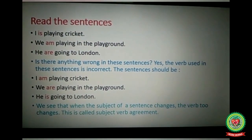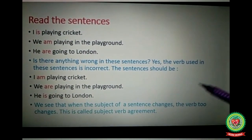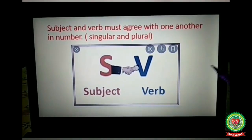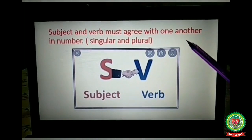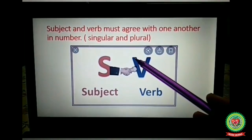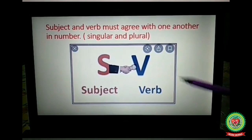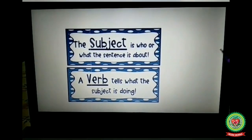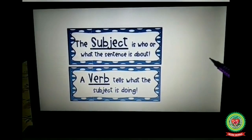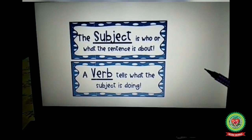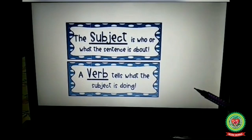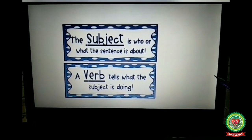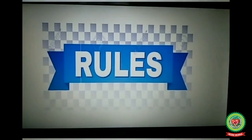This is called subject-verb agreement. First of all, subject and verb must agree with one another in number, whether singular or plural. First, understand what a subject is — a subject is who or what the sentence is about. A verb tells what the subject is doing.